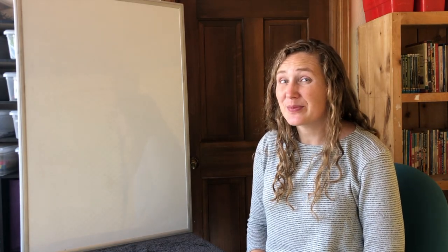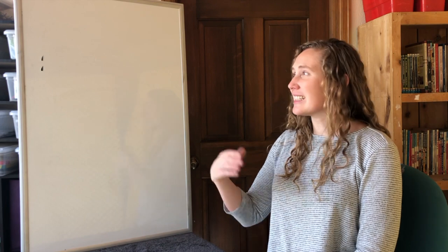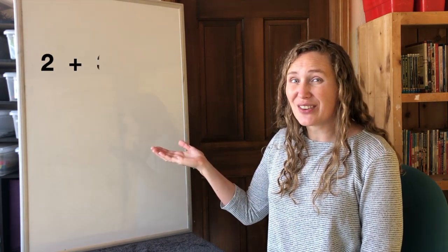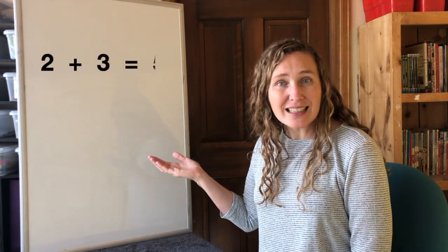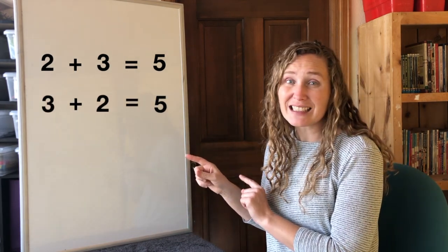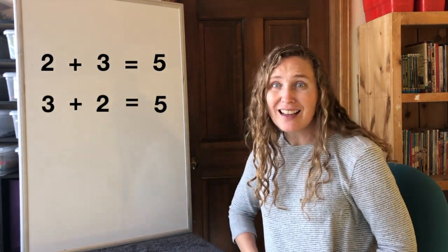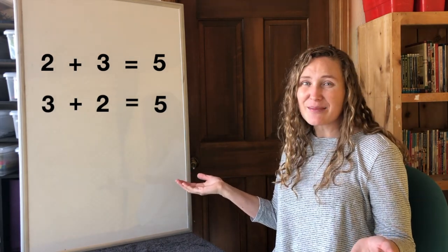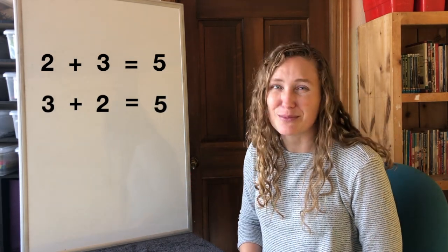Let's start with a rhyme. To make a number sentence, I write two add-ins down. Add them together and a sum can be found. Now flip out those add-ins, and what do you see?